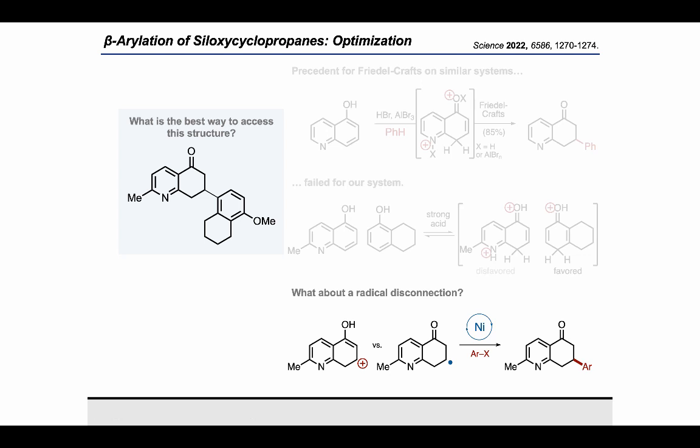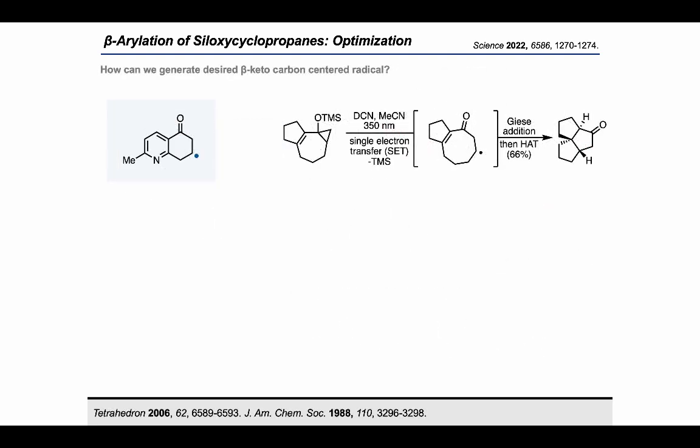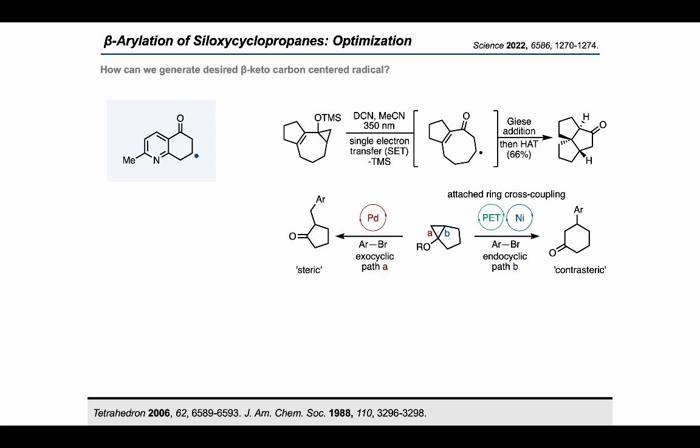There was literature precedent for a Friedel-Crafts on a similar system, however these strongly acidic conditions failed for our system. With our options running out for two-electron processes, we decided to start considering radical disconnections. After establishing the need for a radical disconnection, we had to think about how we would actually generate a radical beta to a ketone. In 2006, Matei showed that photo-induced single electron transfer triggered endocyclic ring opening of the siloxycyclopropane shown, which then underwent Giese addition in 66% yield. With palladium-catalyzed systems, cyclopropanes undergo exocyclic ring opening to minimize steric clash. However, with this photo-induced single electron transfer, we imagined being able to access the contrasteric product, which could then be intercepted with nickel to forge our desired sp3–sp2 bond.